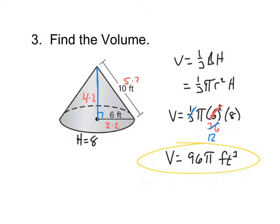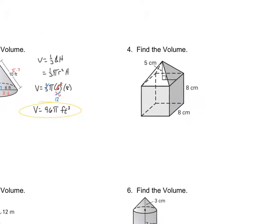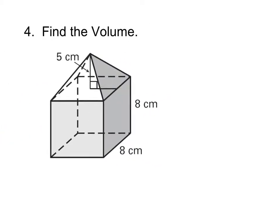All right, what I'd like you guys to do now is I would like you to try number 4 with the people around you. Ready, set, go. All right, so the two solids that we have in this shape are the cube and the pyramid, right? So our volume is going to be a cube plus a pyramid.